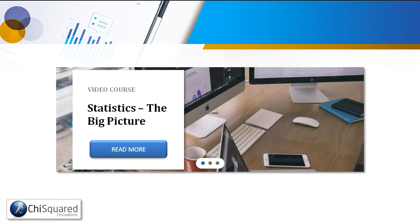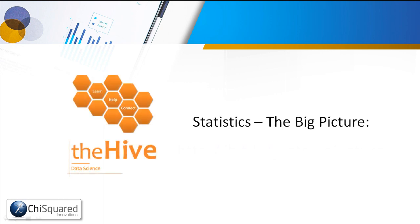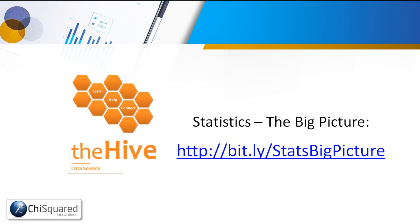By the way, this lesson is part of a video course called Statistics: the Big Picture. I've researched all the different areas and nooks and crannies of statistics, pulled it all together, and created a mind map of how every little thing in statistics relates to everything else. You can only get it in Statistics: the Big Picture, available in The Hive at bit.ly/statsb igpicture. Thank you very much, and I hope to see you again soon on another episode of PJ Stats.